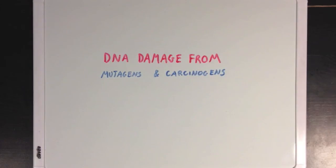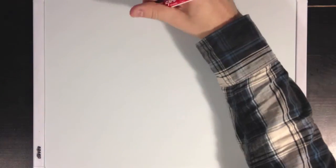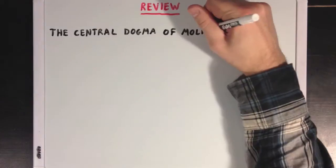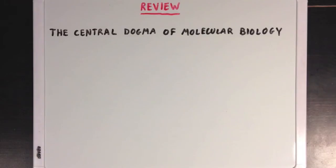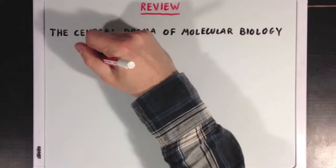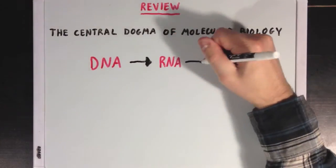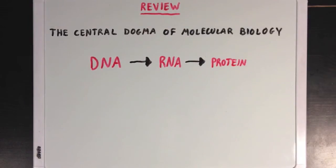Today we're going to talk about mutagens and carcinogens, and how they can cause DNA damage. But first, I want to review the central dogma of molecular biology, and how the genetic information of a cell is stored in the form of DNA, which is then transcribed to form RNA and then translated to generate protein.